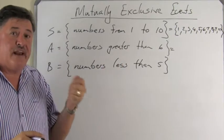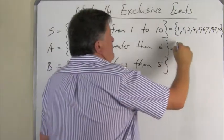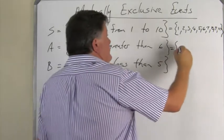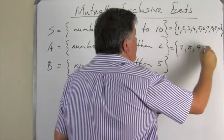Event A, the numbers greater than 6. Please remember it doesn't include 6, so it's greater than, it's 7, 8, 9, and 10.